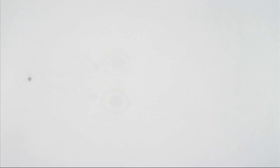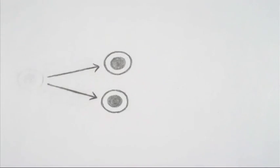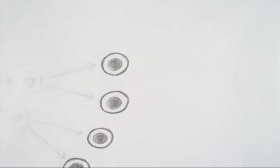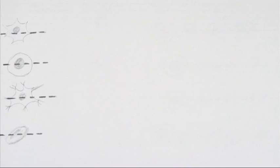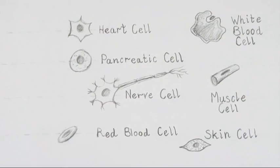At certain stages, most cells stop making copies of themselves and start to specialise. When we are fully formed, almost all of our cells are specialised.